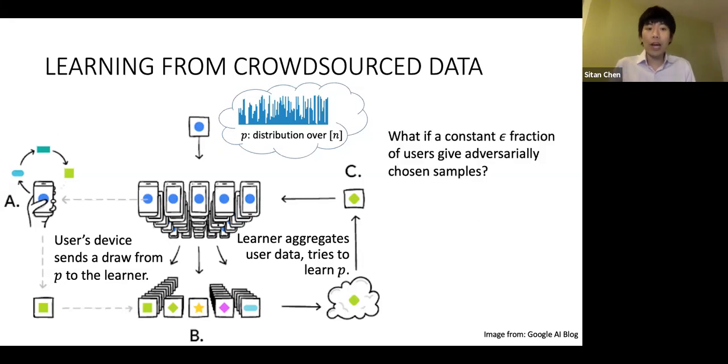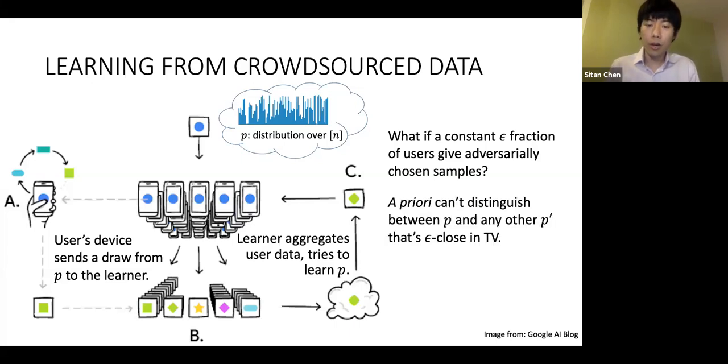As described, this is nothing more than classical distribution learning from IID data, but what if some constant epsilon fraction of users are adversarial and give me samples chosen to skew the outcome of my learner? A basic but not particularly interesting barrier is that you can't distinguish whether your data came from p or from any other epsilon perturbation of p in total variation distance.